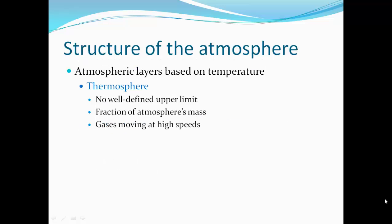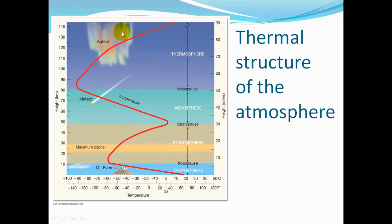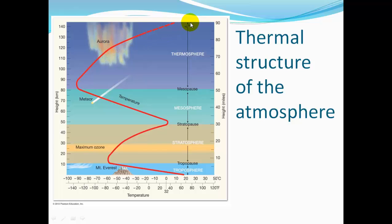The thermosphere has no well-defined upper limit. It is a fraction of our atmosphere's mass, with gases moving at high speeds. In the diagram, the red line shows temperature across each atmospheric band. Starting in the troposphere up past Mount Everest, temperature decreases until the tropopause. In the stratosphere it warms, especially past the ozone layer, reaching the stratopause. Then in the mesosphere temperature decreases again to the mesopause, crossing into the thermosphere, which eventually just peters out into space.